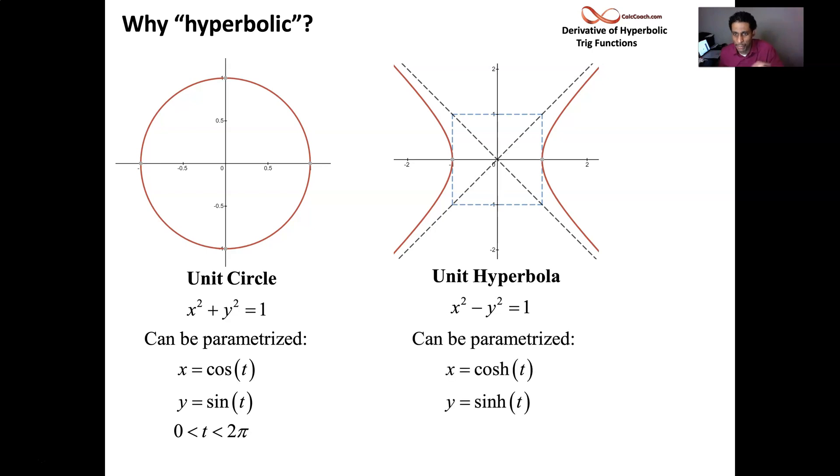You will let X be hyperbolic cosine and let Y be hyperbolic sine. And you will travel along one of the branches of the hyperbola. And there are no restrictions on T. T can be anything from minus infinity to infinity.